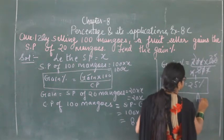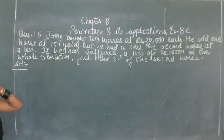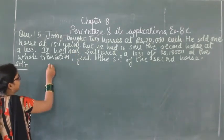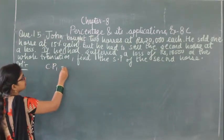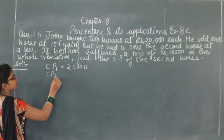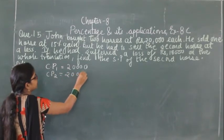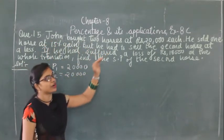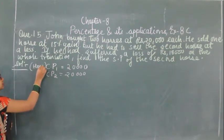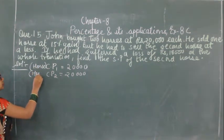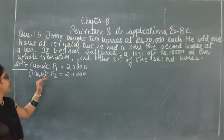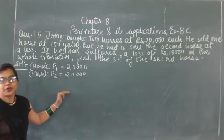The answer is 25%. Question number 13: John bought 2 horses at 20,000 rupees each. So the cost price of the first horse is ₹20,000 and the cost price of the second horse is also ₹20,000. Total cost price is ₹40,000.